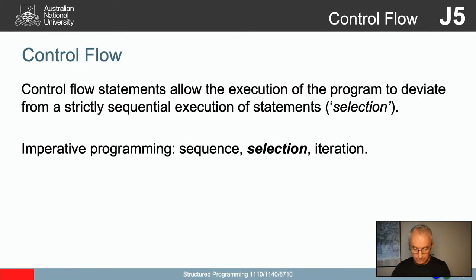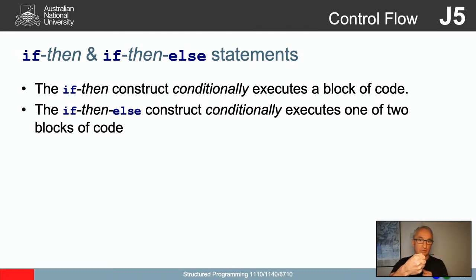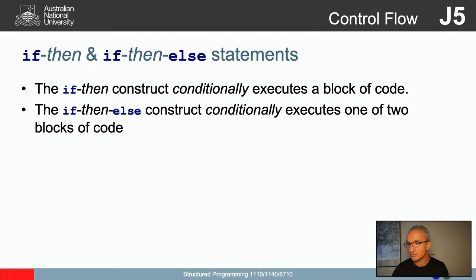Control flow statements allow the execution of a program to deviate from strictly sequential execution. So far you've done step by step by step — now we introduce the idea that you do things differently. Today we're starting with if/then and if/then/else statements. An if/then construct conditionally executes a block of code: if a condition is true, execute this; if not, skip it. An if/then/else has two blocks — execute one if true, the other if false.